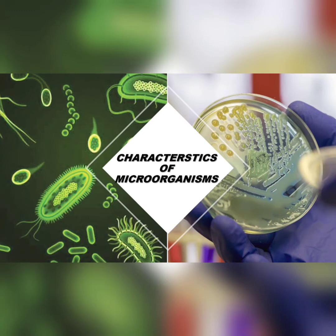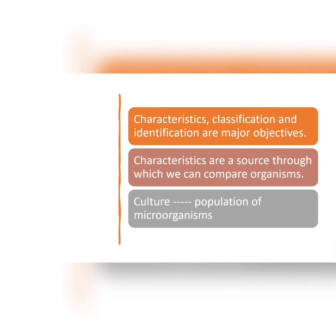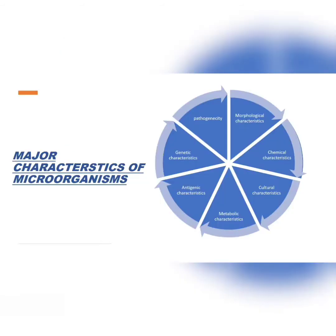Microorganism characteristics, classification, and identification are major objectives of all biological sciences. Classification means bringing variety of microorganisms in nature together. Once we learn the characteristics of organisms, we can compare them with other organisms to discover their similarities or differences. Because microorganisms are very small in size, we study them as a culture — a population of microorganisms that are only of one kind.